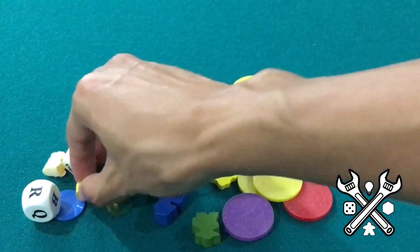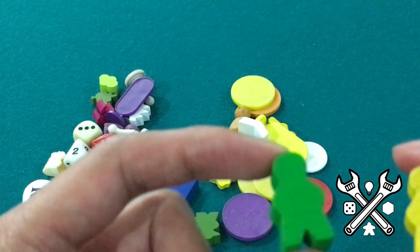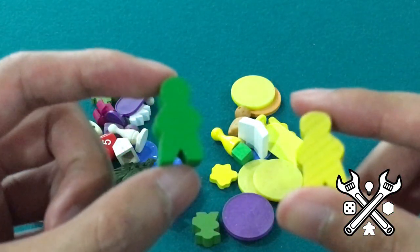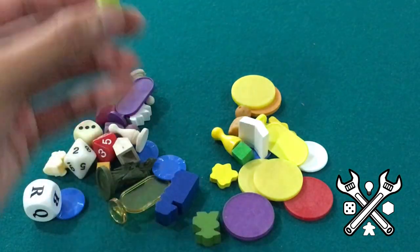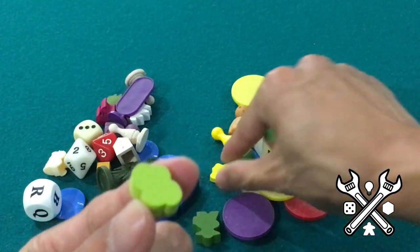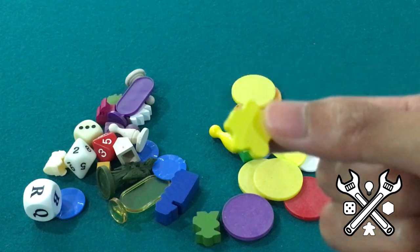But we also have our meeples from before, our little clothespins, this time one in green and one in yellow. And we also have our little fart cloud as well. Awesome. And there's a little splat to go with.